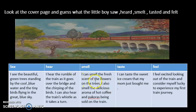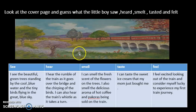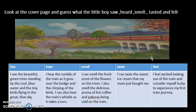Then smell. I can smell the fresh scent of the flowers on the trees — assuming this is a flowering tree. You can also say you can smell the fresh air. If you are sitting inside the train as the boy is doing, you will be able to smell so many different things. I have written that I can smell the delicious aroma of hot coffee and pakoras being sold on the train. If you don't want to mention coffee, you can say hot tea or cold ice cream.